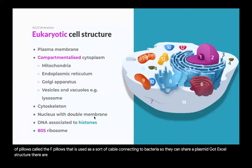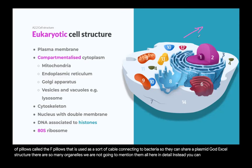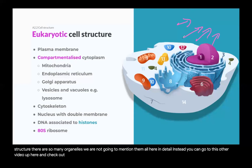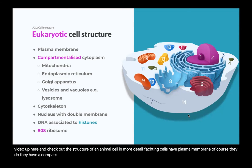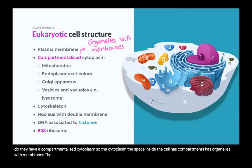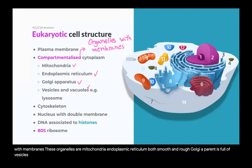Eukaryotic cell structure has so many organelles we are not going to mention them all here in detail — you can check out the animal cell video up here. But eukaryotic cells have a plasma membrane and a compartmentalized cytoplasm with membrane-bound organelles: mitochondria, endoplasmic reticulum (both smooth and rough), Golgi apparatus full of vesicles, and special vesicles such as lysosomes, peroxisomes, and other forms of vesicles.